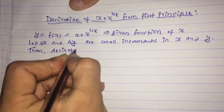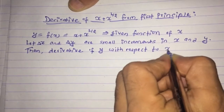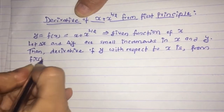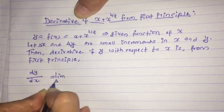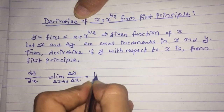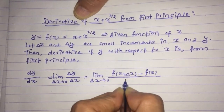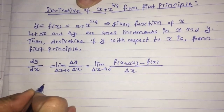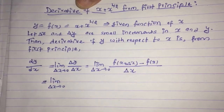Because a change in the value of x causes a change in the value of y, the derivative of function y with respect to its variable x is given by the first principle. We can write it as dy/dx is equal to limit as δx tends to 0 of [f(x + δx) minus f(x)] divided by δx.